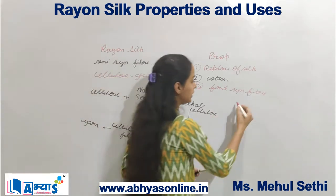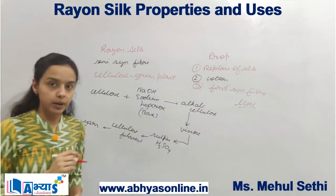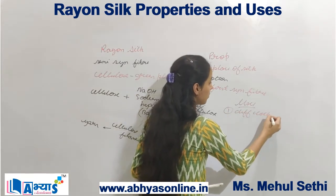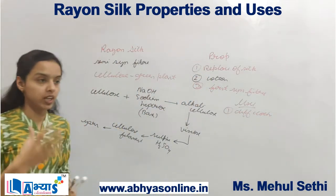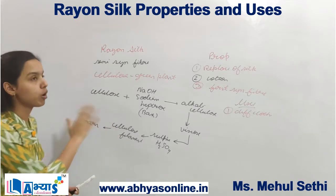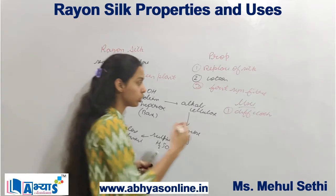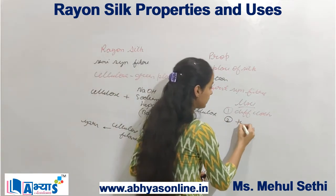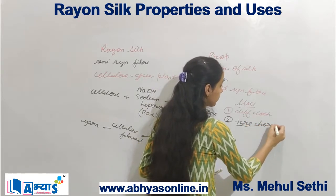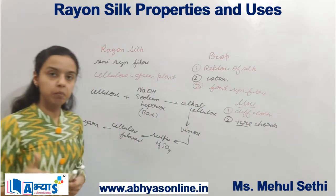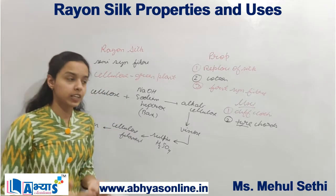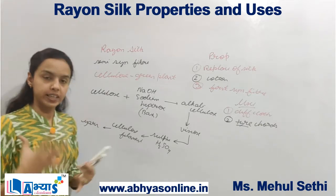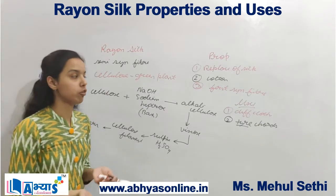The uses of rayon include: it can be used for different types of clothes — especially those originally made from silk can now be made with rayon silk. It can also be used in automobiles to make tire cords. Rayon can also be used to make ropes, jute bags, and a variety of other materials.